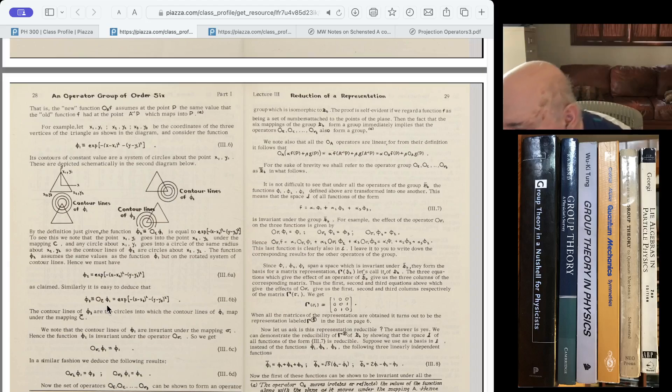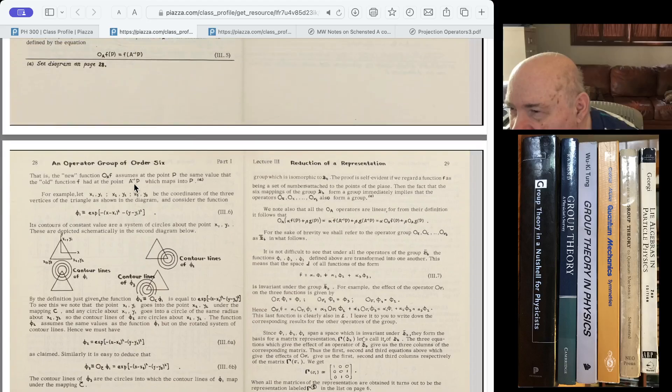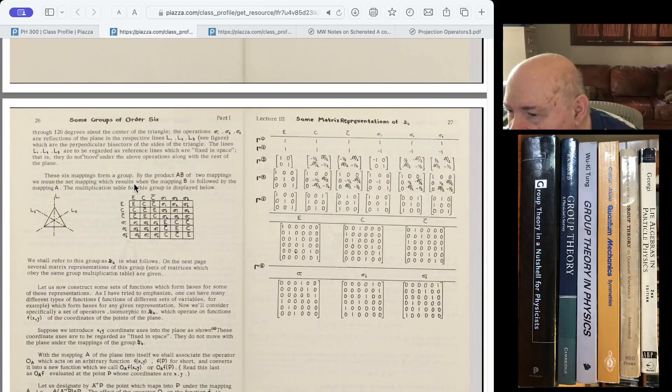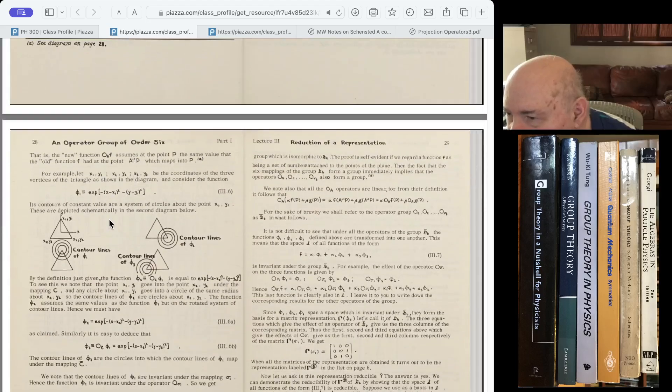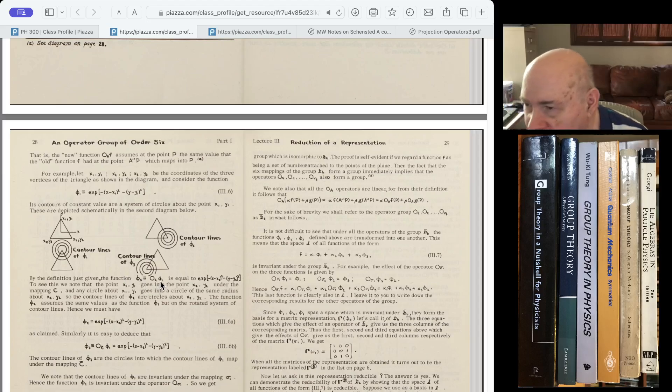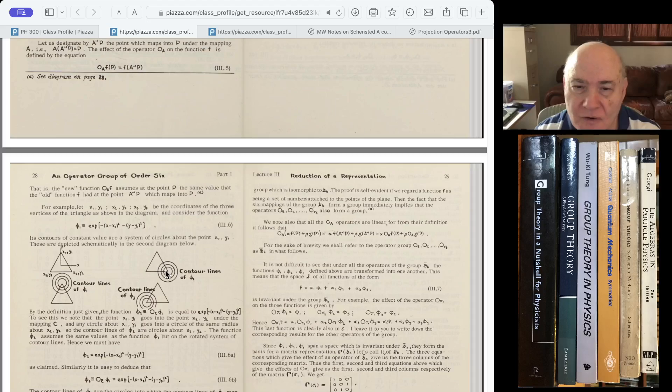And then if you apply the operator, the counterclockwise rotation, this one becomes this. This is how she defines phi2. Phi2 is equal to OC, she defines it OC or OC bar. I'm not really sure. Phi2 is OC on phi1. So this is phi1, and this is phi2 on OC.